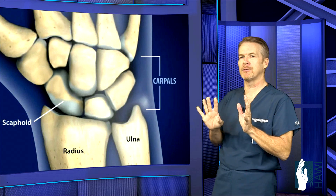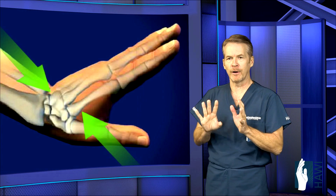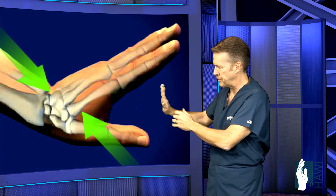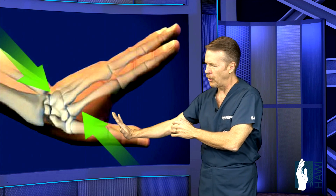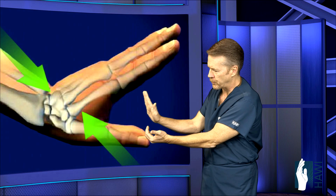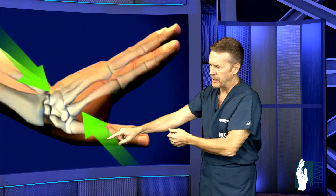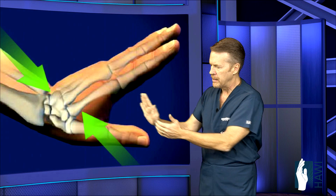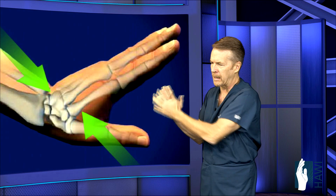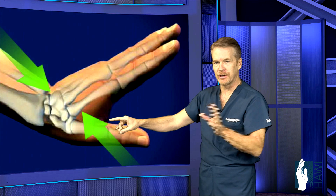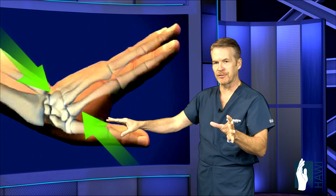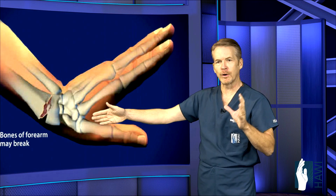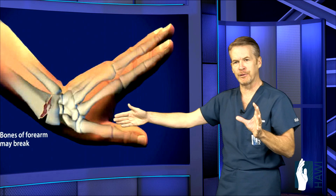Let's look at the mechanism of injury for a distal radius fracture or a scaphoid fracture. A fall on an outstretched wrist, forces going up through the palm, shearing or pushing the wrist backwards. And as you can see on this next slide, let's look at an actual Colles' fracture or a distal radius fracture — the most common bone fractured is at the tip of the forearm, the radius.